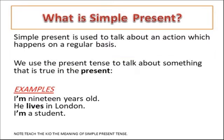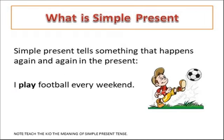What is Simple Present Tense? Simple Present is used to talk about an action which happens on a regular basis. We use the Present Simple to talk about something that is true in the present — for example: I am 19 years old. He lives in London. I am a student. Simple Present tells something that happens again and again in the present: I play football every weekend.